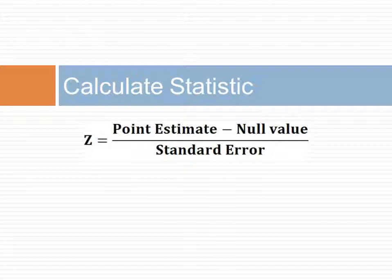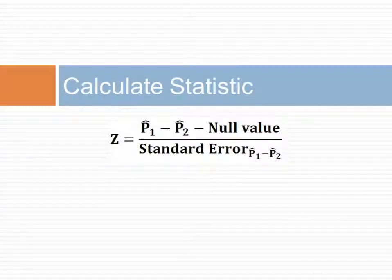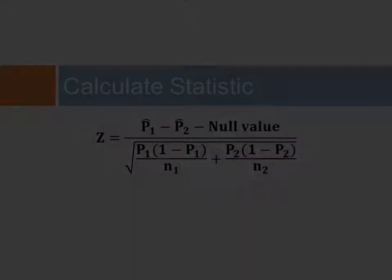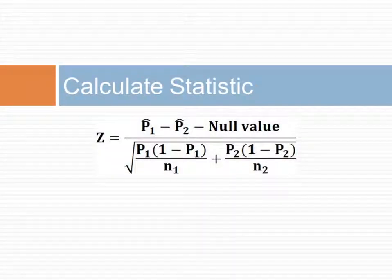The third step in our framework for hypothesis testing is to calculate the statistic. The statistic z is calculated from the point estimate minus the null value, divided by the standard error. The point estimate is the difference of the two sample rates. The standard error is calculated as the sum of the standard error of each rate. Note that in this equation, P1 and P2 are hypothesized population values, and P1-hat or P2-hat are sample estimates.